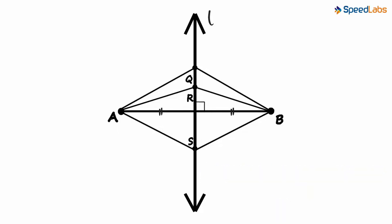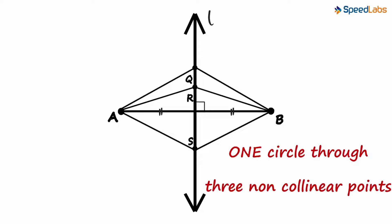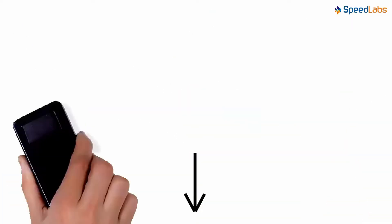We can use this theorem to prove that only one circle passes through three non-collinear points. The proof is really simple.